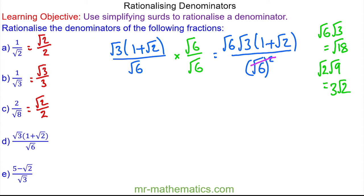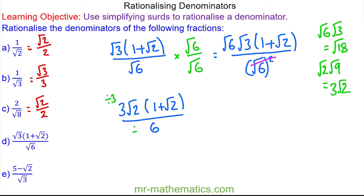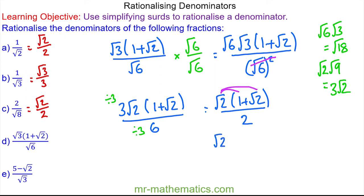We'll put this back into the numerator. So we have 3 root 2 lots of 1 plus root 2, over 6. We'll simplify this fraction and divide both by 3, so now we have root 2 lots of 1 plus root 2, over 2. And finally we'll expand this bracket out: so we have root 2 plus root 2 squared, which is 2, over 2.